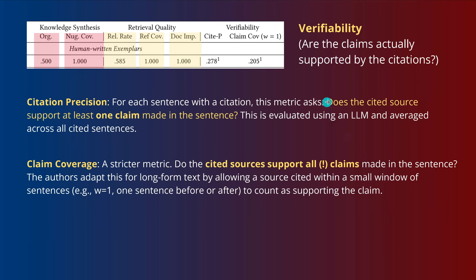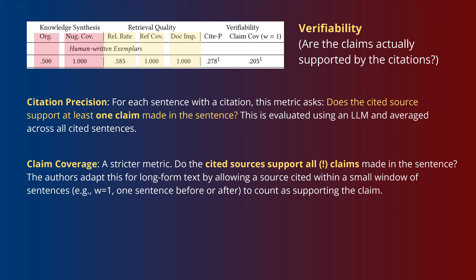Finally, the most important for me: verifiability. Whatever we claim, there is a check against published work — are the claims actually supported by the citation? They use two indicators: citation precision, which asks whether the cited source supports at least one claim made in the AI sentence, and claim coverage, which checks whether the sources support all the claims made in the AI sentence — every little detail traced back to arXiv references.